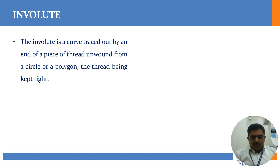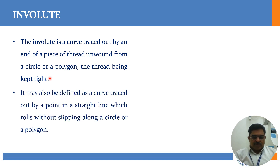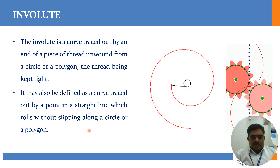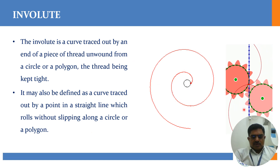The involute is a curve traced out by the end of a piece of thread unwound from a circle or a polygon, the thread being kept tight. It may also be defined as a curve traced out by a point in a straight line which rolls without slipping along a circle or a polygon. Involute is actually a profile especially used in gear teeth design.